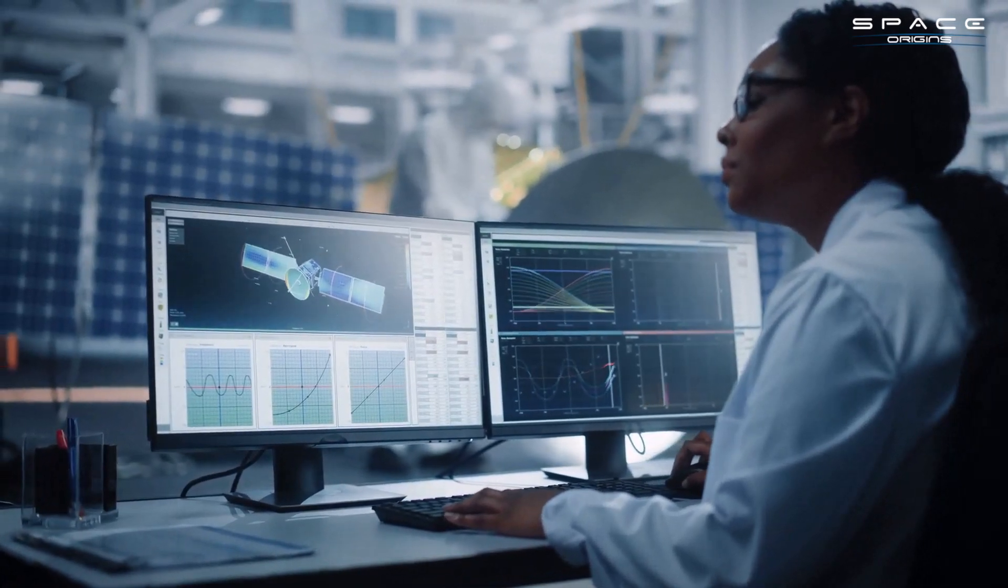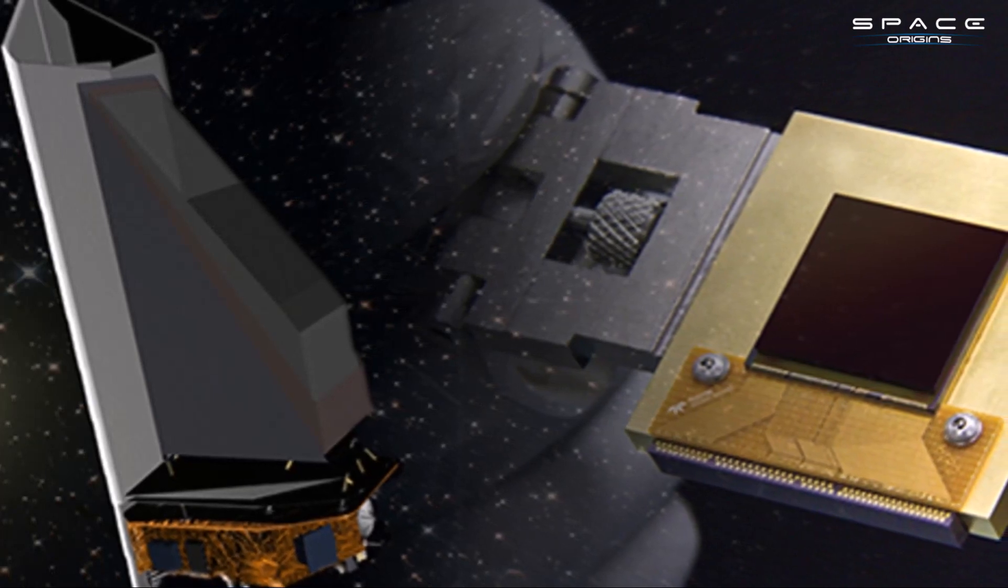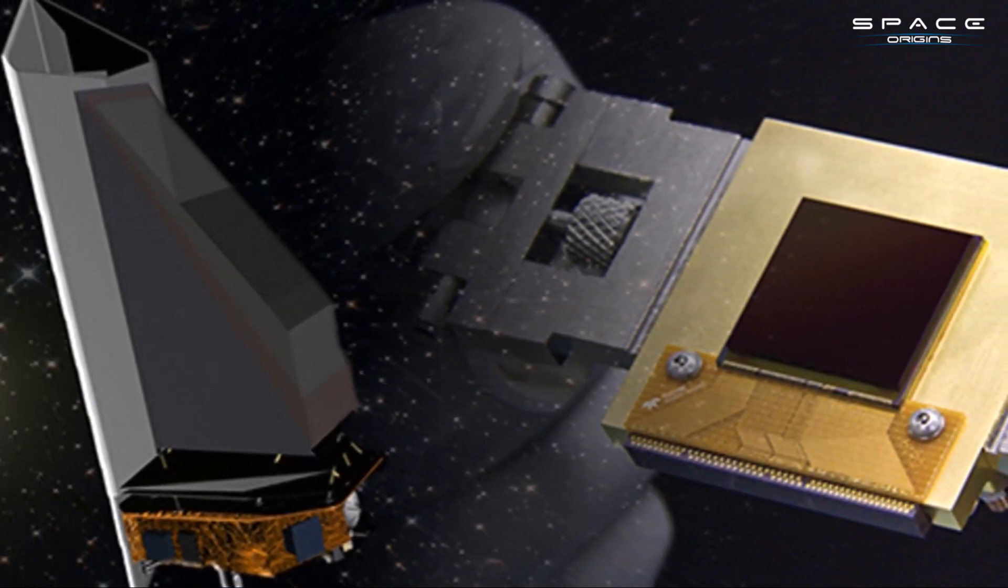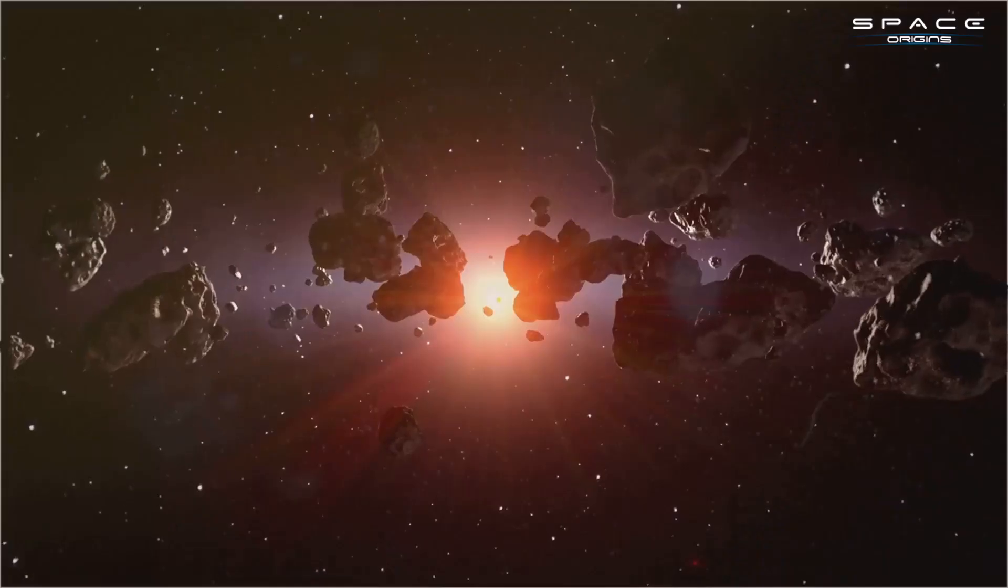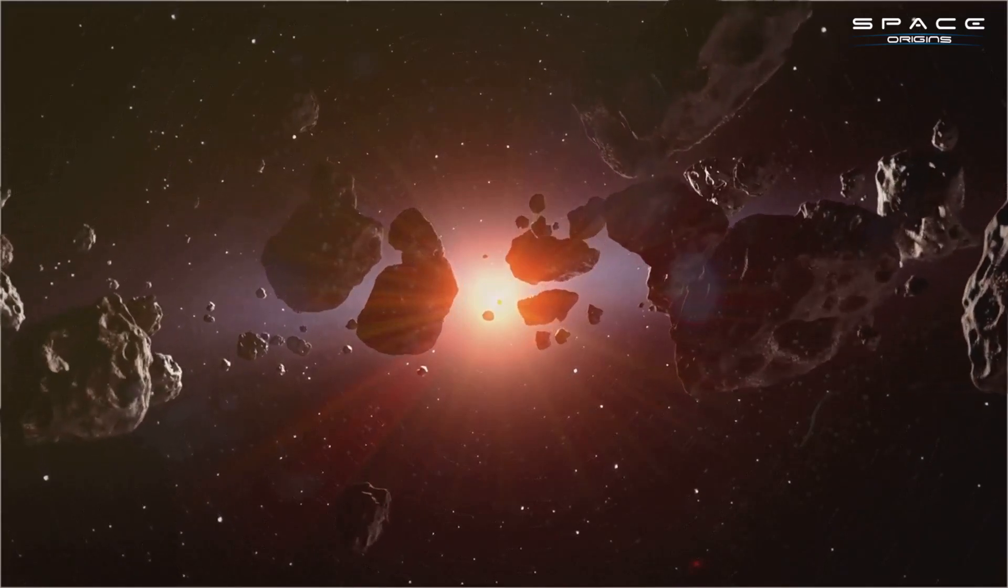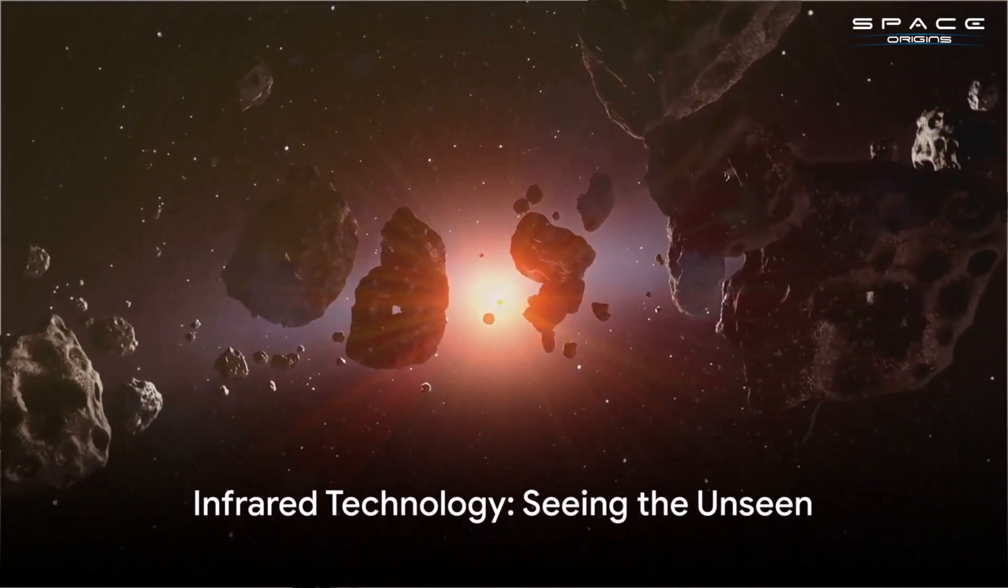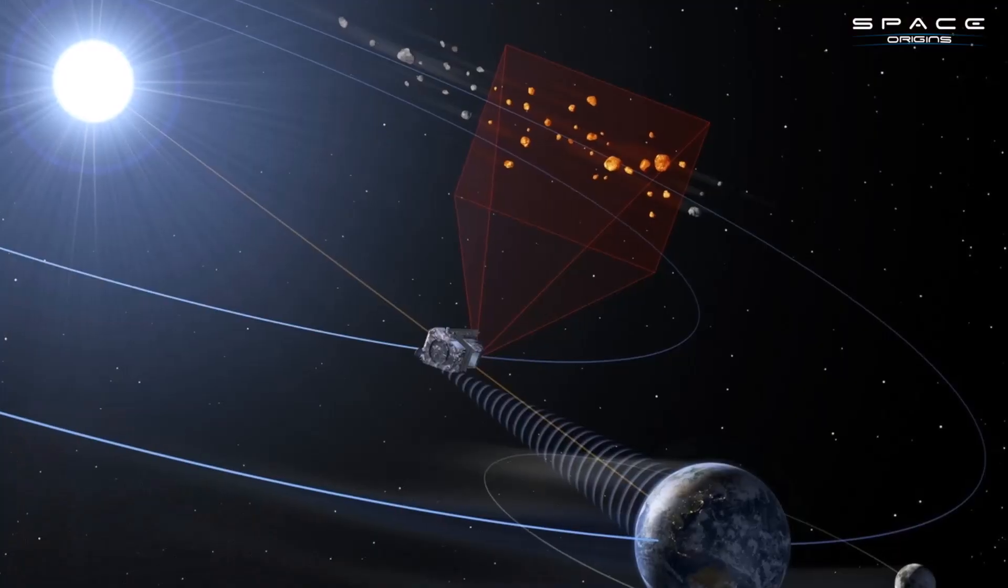Among these developments are infrared space telescopes, such as NASA's NEO Surveyor and the European Space Agency's NEOMIR. These instruments are designed to scan the sunward region, a notoriously difficult area to observe due to the sun's overpowering glare. But how exactly will these telescopes work? Well, they'll utilize infrared technology.